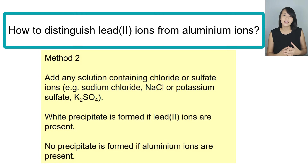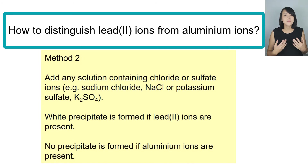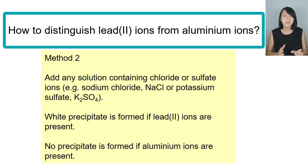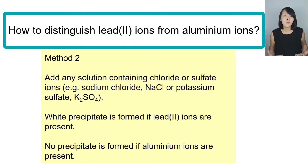Alternatively, a more common method is to add any solution containing chloride or sulfate ions — for example, sodium chloride solution or potassium sulfate solution. If a white precipitate forms, we can confirm that lead(II) ions are present. Aluminium ions do not form precipitate with chloride or sulfate ions, because aluminium chloride and aluminium sulfate are both soluble in water.